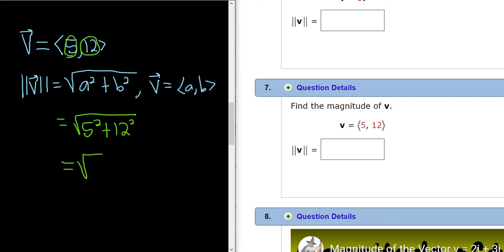So this is equal to the square root of—5 squared is 25, and 12 squared is 144. So we have 25 plus 144, which is equal to 169.